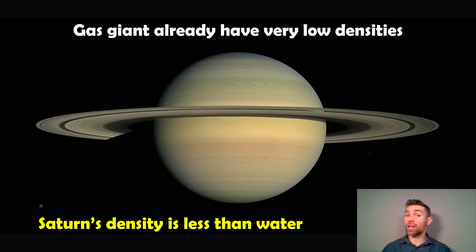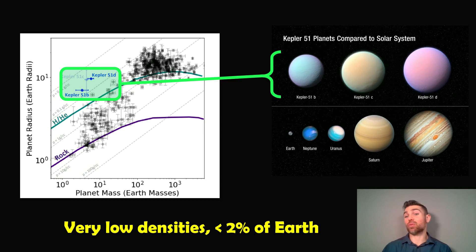Now, gas giants already have quite low densities. So, for example, Saturn has a density which is less than water, which for a planet and a planet this size is actually quite low. So a gas giant is already quite low density. So what does that actually make these Super Puffs? Well, it makes them stand out on their own, basically.